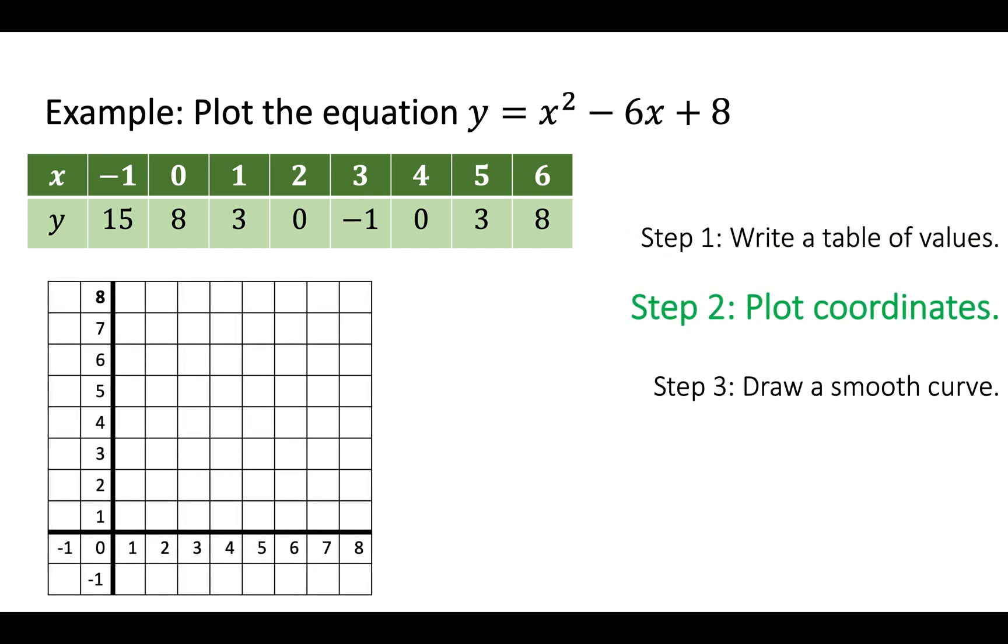That's what step two is going to be. We're going to plot these coordinates on the grid. Minus 1, 15 is too high for our grid, so we're going to miss that one out. We can't get up to 15 up here.